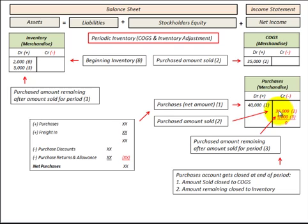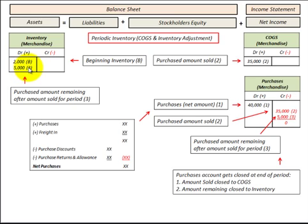What happens to the remainder? We had $40,000 and used $35,000, leaving $5,000. We credit the Purchases account by $5,000 to reduce it, and the corresponding debit is to Inventory under assets — so we debit $5,000 to inventory. We had a beginning balance of $2,000 and now add $5,000 from what hadn't sold.